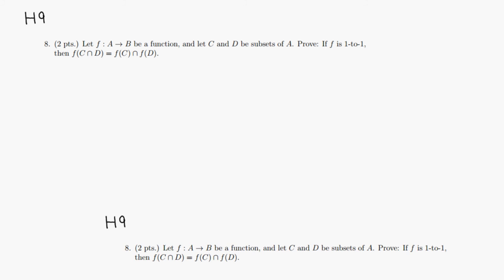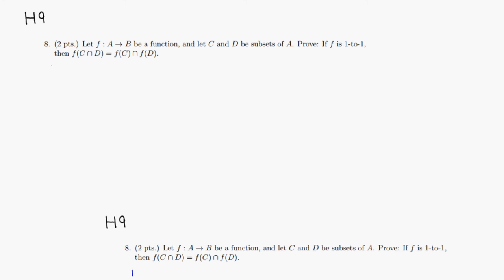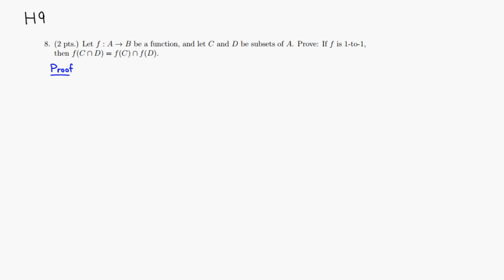Since we're talking about the equality of two sets, we're going to do element chasing and mutual containment. First, we need to show that F of C intersect D is a subset of F of C intersect F of D.